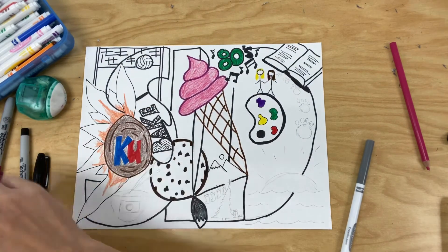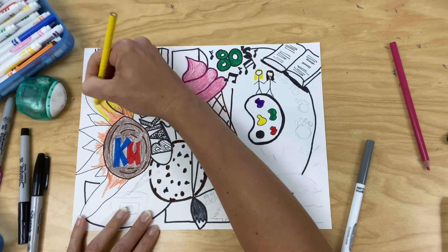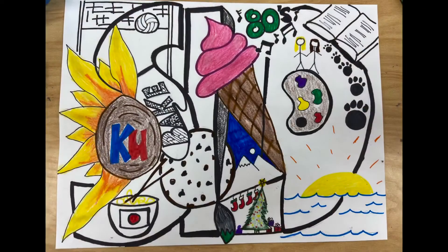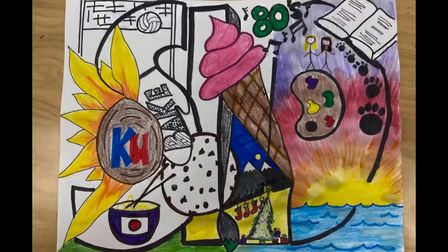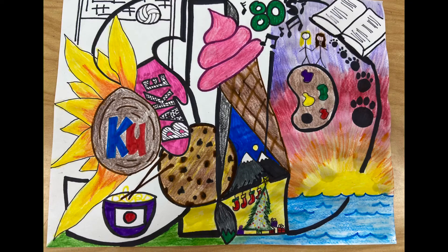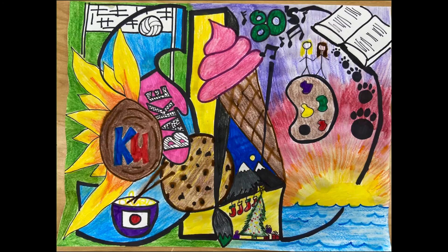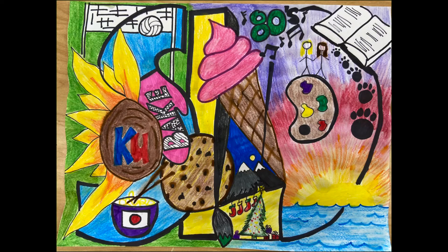You are coloring everything on your visual self-portrait, so not only are you coloring in the imagery and the objects, but you are also going to be filling in the background. Again, there should be no white space left on your paper except for the objects that are actually white in reality.